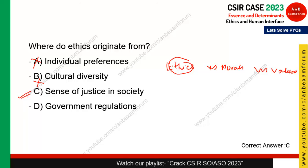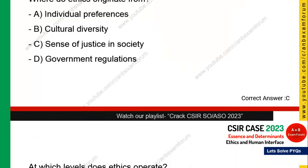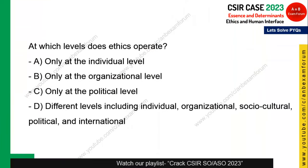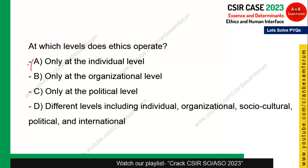Next question: at which level does ethics operate? Ethics does not operate only at the individual, organization, or political level. It operates at all levels — individual, organization, social, cultural, political, and international. Option D is the correct answer.